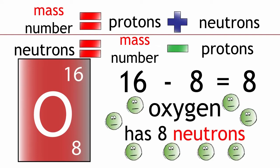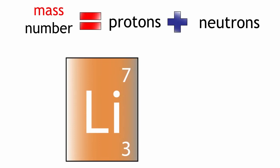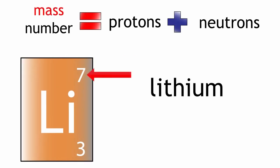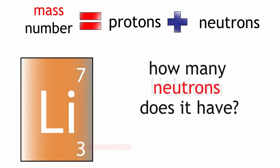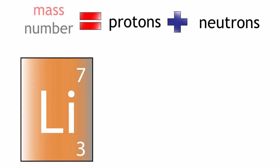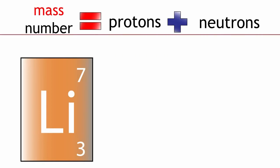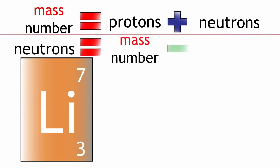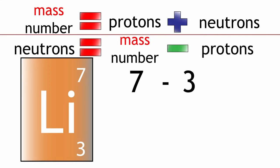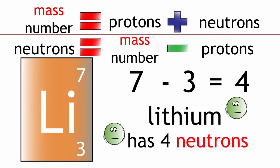Let's take another example. Lithium has a mass number of 7 and has 3 protons. How many neutrons does it have? Mass number equals protons plus neutrons. We can rearrange this to show that neutrons equals mass number minus protons. Neutrons equals 7 minus 3, equals 4. Lithium therefore has 4 neutrons.